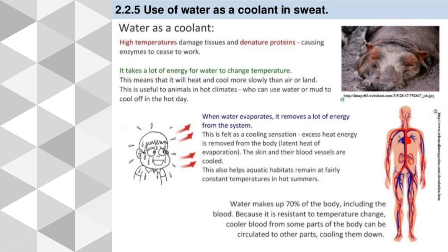Water acts as a cooler in the body. High temperatures can damage tissues and denature proteins, causing enzymes to stop working. It takes a lot of energy for water to change temperature, meaning it heats and cools more slowly than air. This is useful to animals in hot climates, who can use water or mud to cool off. Water makes up 70% of the body including the blood, and because it is resistant to temperature change, cooler blood from some parts of the body can be circulated to other parts to cool them down.